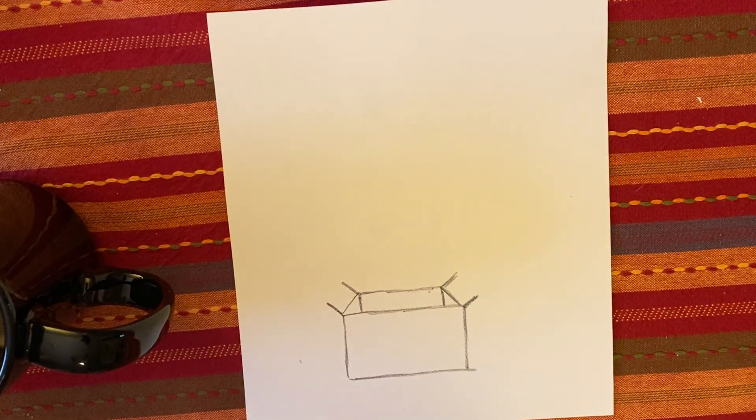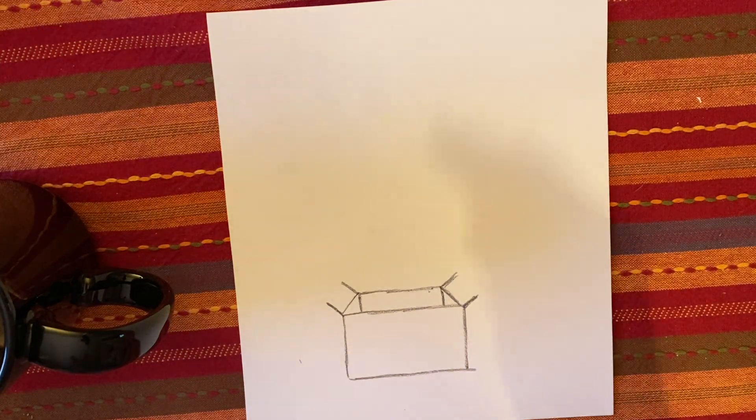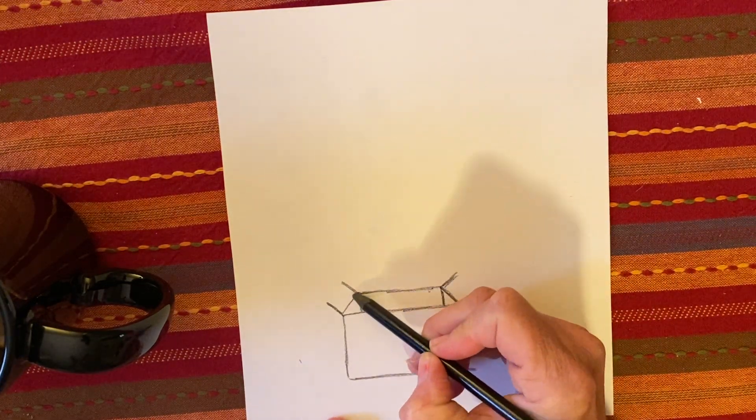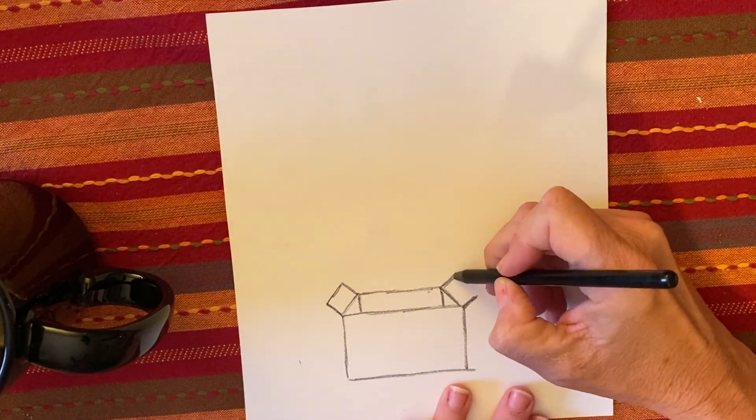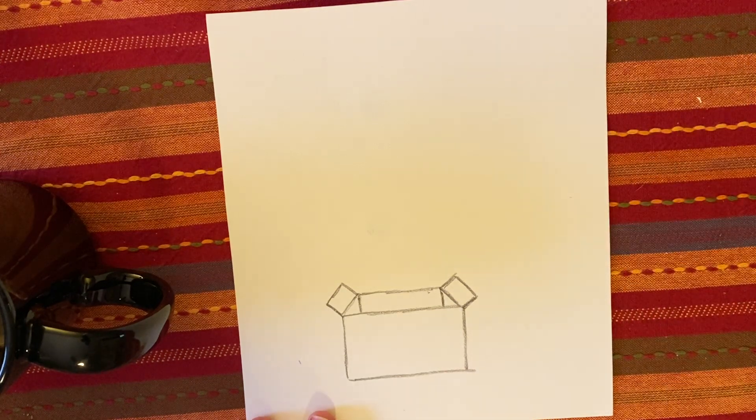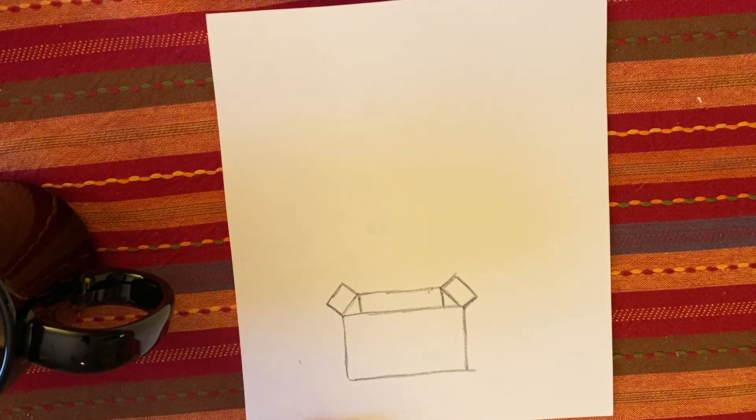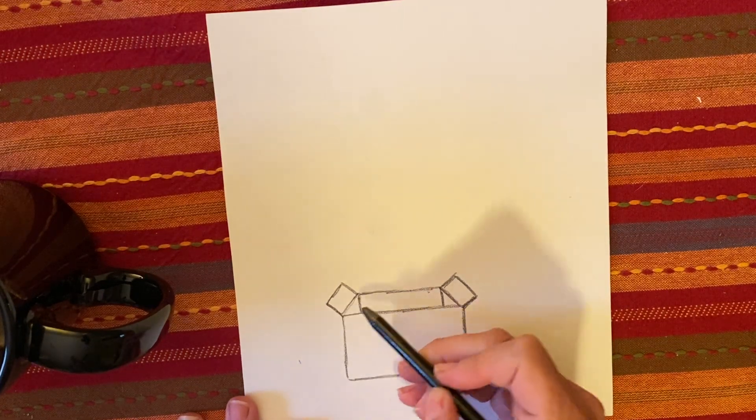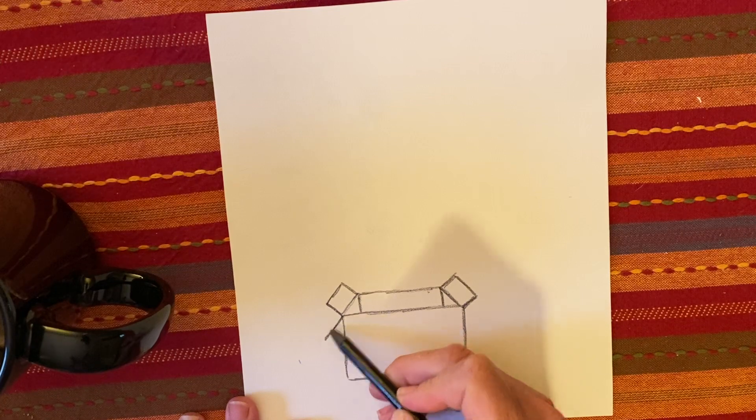This is going to be the flap of the box. This line over here is parallel here. Now we're going to connect those two again. Here's this line, here is going to be parallel to here and this line is going to be parallel to here. The last lines we need are the front of the lid.